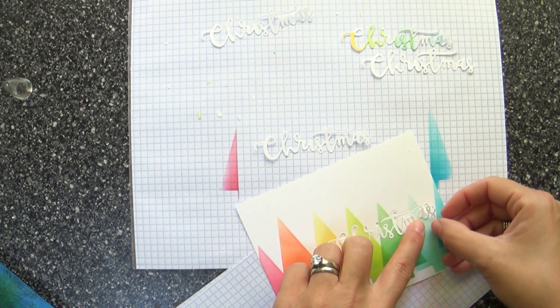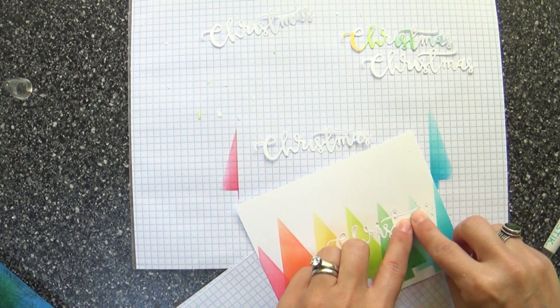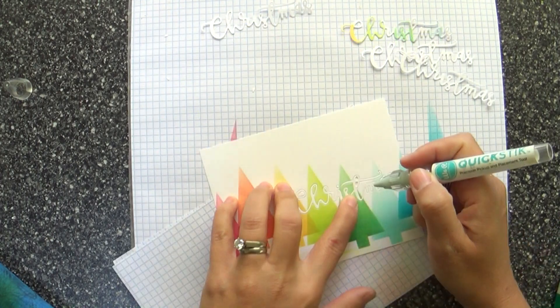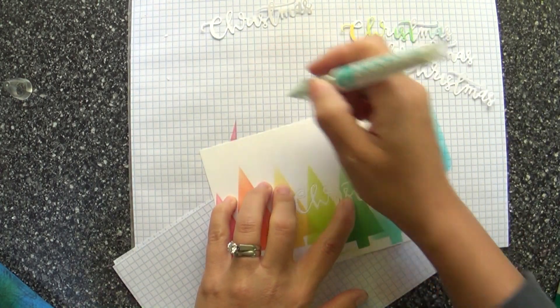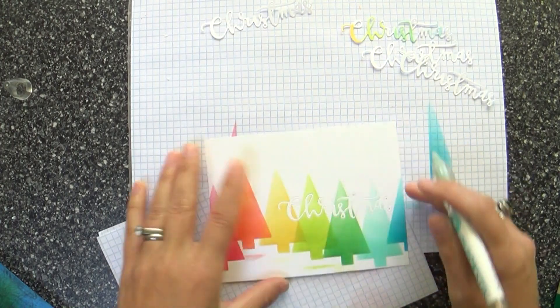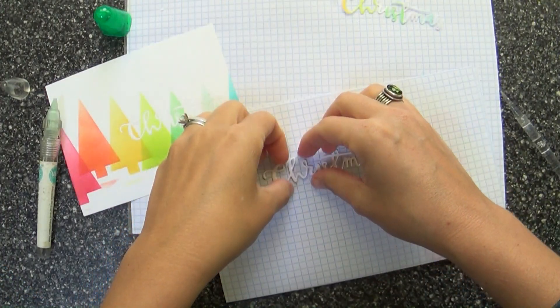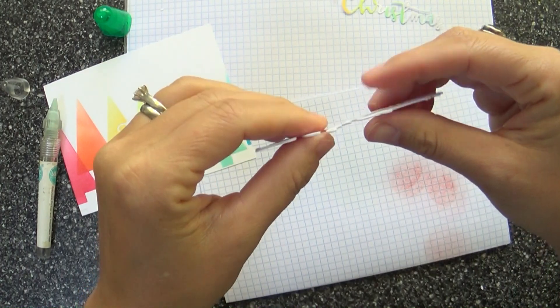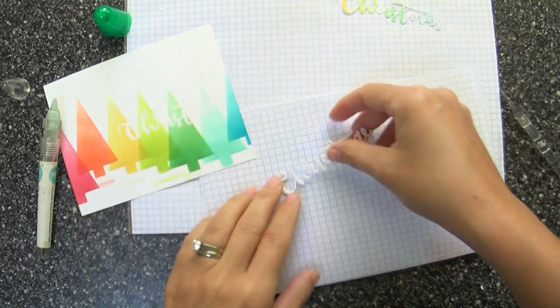I went ahead and die cut four white ones, and then I've got all my original nooks and crannies there that I'm placing back into the panel. Then I'm going to adhere all my little words together, make it nice and thick and stacked and sturdy and awesome.